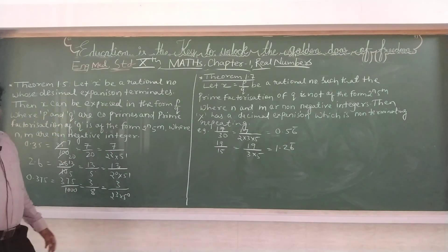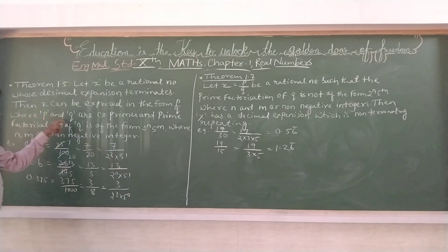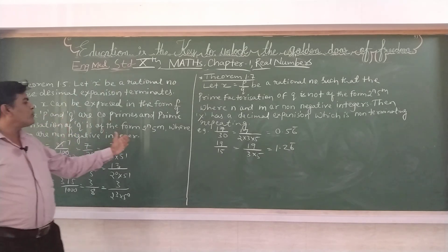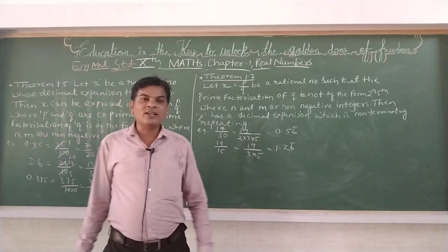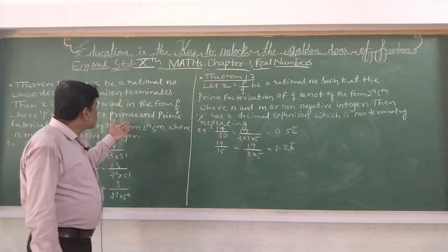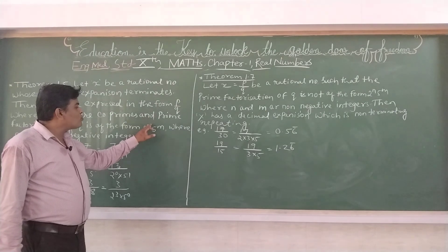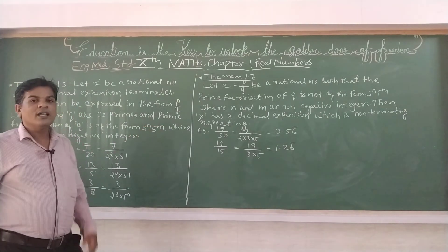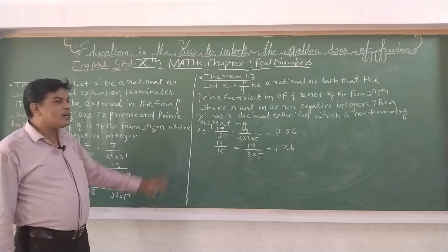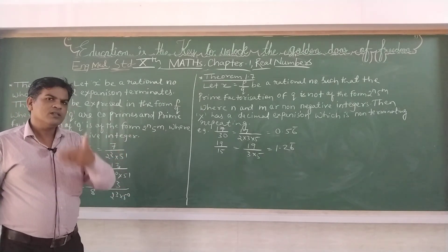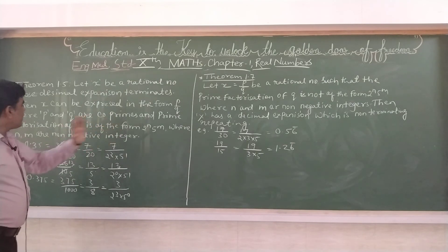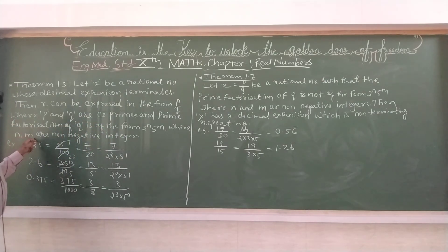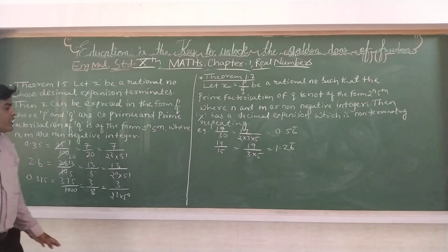Where p and q are co-prime, and prime factorization of q is of the form 2 to the power n and 5 to the power m. Aur unki jo prime factorization yaani q yaani jo denominator hoti hai, uski prime factorization karenge to 2^n aur 5^m hoga — yaani 2 aur 5 ko multiply karenge to 10, 100, 1000 aise banenge. Where n and m are non-negative integers.